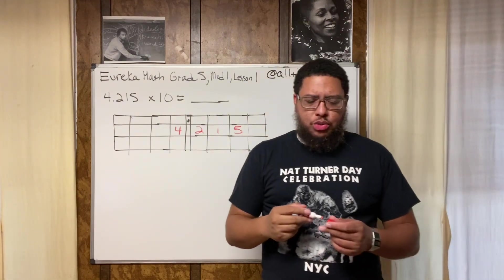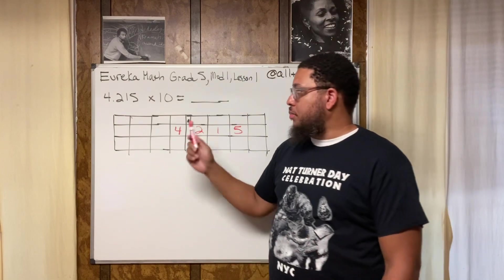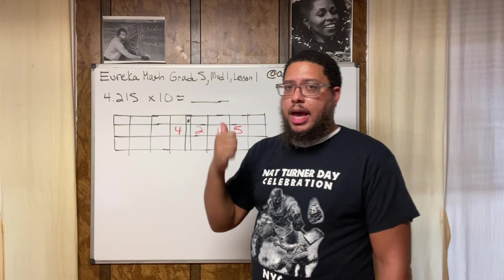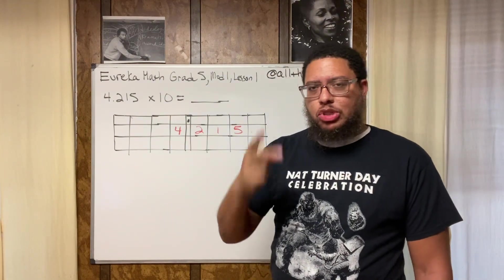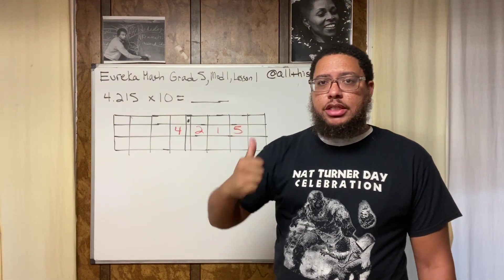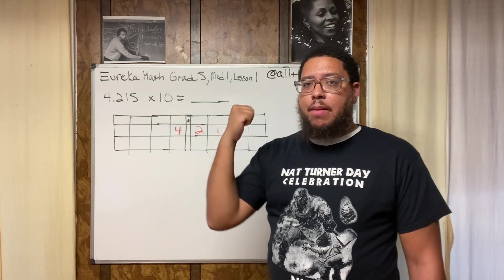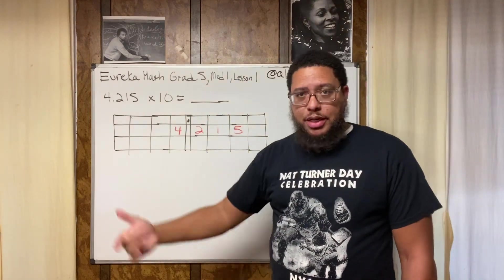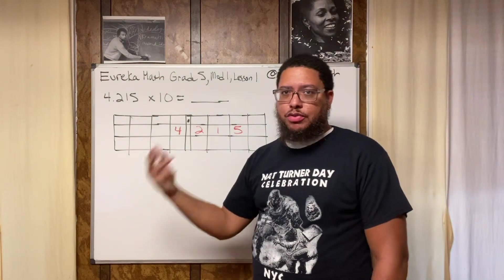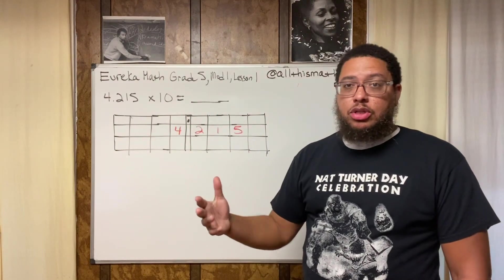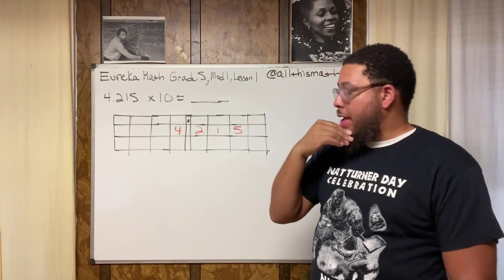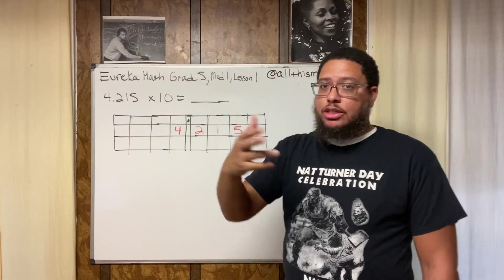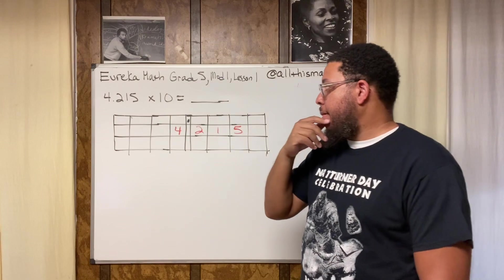Now there are two things you got to take into consideration when you're doing problems like this using the place value chart. What direction should the numbers move, and how many spaces should they move? Those are the two critical questions. What direction should the numbers move, and how many spaces should they move? Do the numbers move to the left or to the right? And how many spaces do the numbers move? Do they move one space, two spaces, three spaces, four spaces, whatever? Those are the two questions you got to memorize. As a parent trying to help your child with this, you got to memorize those two questions. As a child looking at this, you got to memorize those two questions.